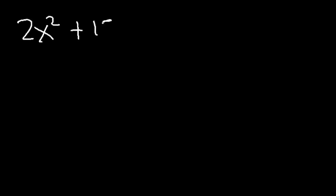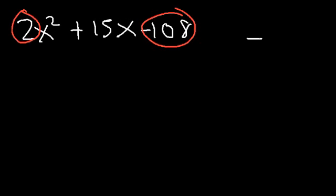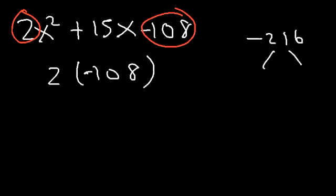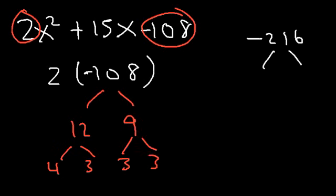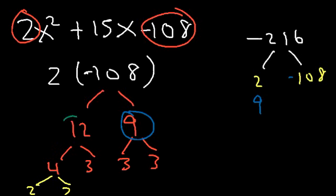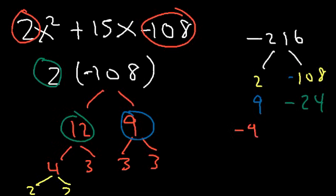Let's try one more: 2x squared plus 15x minus 108. We multiply 2 and 108 to get negative 216. Breaking 108 down: 108 is 12 × 9; 12 is 4 × 3; 9 is 3 × 3; 4 is 2 × 2. The numbers 2 and 108 are too far apart, so we jump to 9. Taking out 9 leaves 12 and 2, giving 24. The numbers 9 and 24 differ by 15, so negative 9 and positive 24 work: 24 × (−9) = −216, and 24 + (−9) = 15.